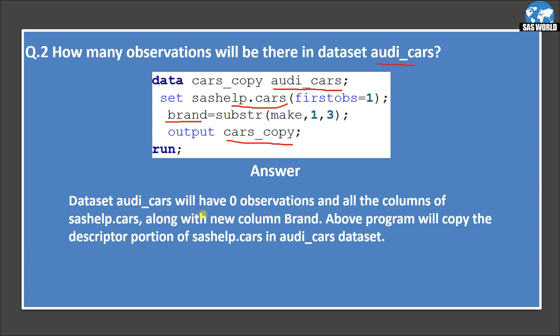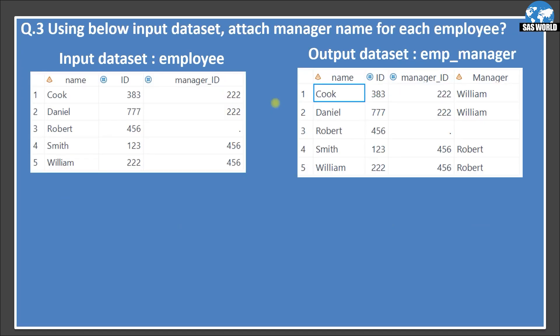Dataset audi_cars will have zero observations and all the columns of sashelp.cars along with the new column brand. The above program will copy the descriptor portion of sashelp.cars into the od_cars dataset, so od_cars will have the descriptor portion of sashelp.cars — meaning all the columns along with the new column brand.